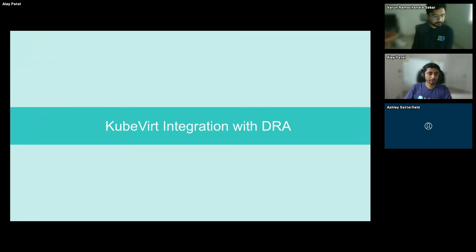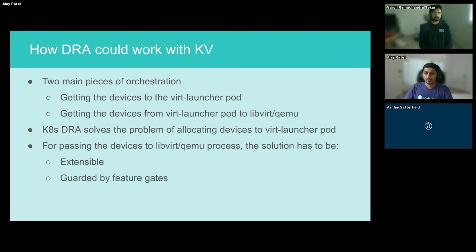My colleague Aleph will now talk about how KubeVirt can benefit from DRA and what its integration looks like. For the rest of this presentation, I will cover how a device managed by DRA plugins can be used within a KubeVirt VMI. There are two main pieces of orchestration involved: first, getting the devices to the Virt Launcher pod; and second, passing the devices from Virt Launcher to the QEMU KVM guest process. The first problem will be handled by the CAITS DRA plugin.